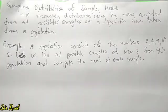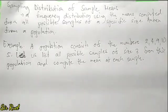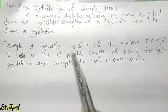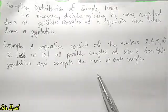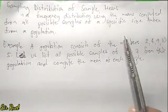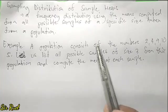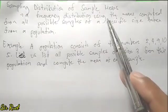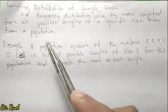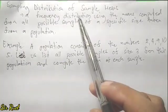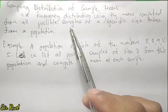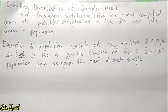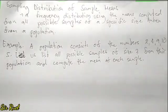Good day. We are now in Chapter 3 of our subject Statistics and Probability. Our lesson for today is about how to construct the sampling distribution of sample means. Let's define first what it is: based on the book, it is a frequency distribution using the means computed from all possible samples of a specific size taken from a population.